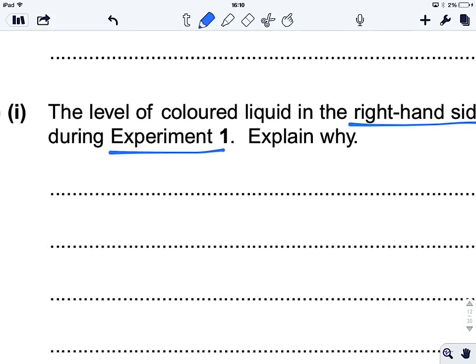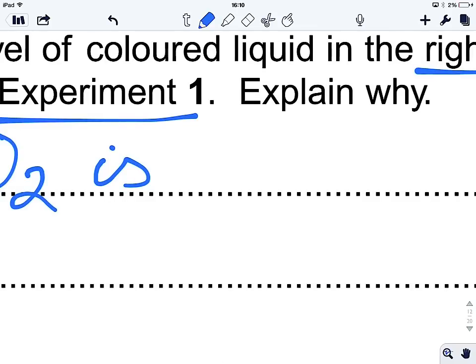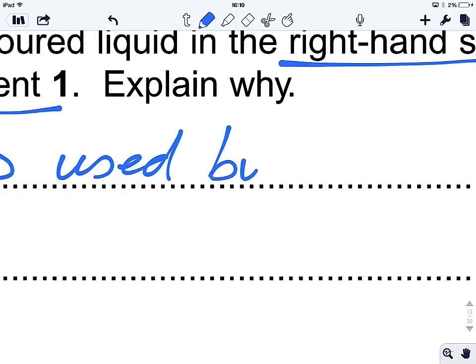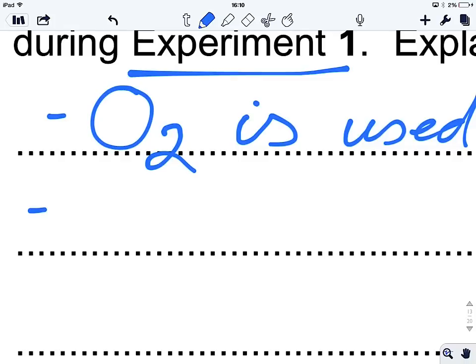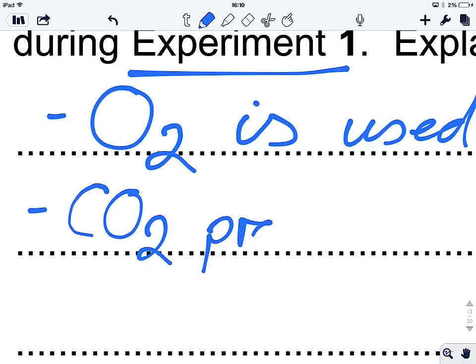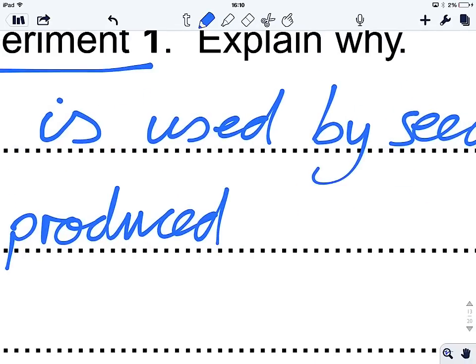Let's have a look. So, let's say that O2 is used by the seeds in aerobic respiration. And then that process of aerobic respiration is going to produce CO2. It's going to be producing CO2, and that's going to be absorbed by the potassium hydroxide.